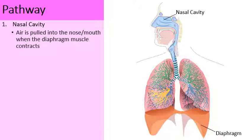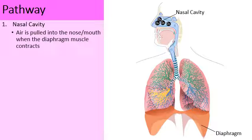Oxygen is pulled into the nasal cavity. The nasal cavity does a great job of warming the air in case it's really dry and really cold. That could be a problem for people with various breathing conditions such as asthma or bronchitis.